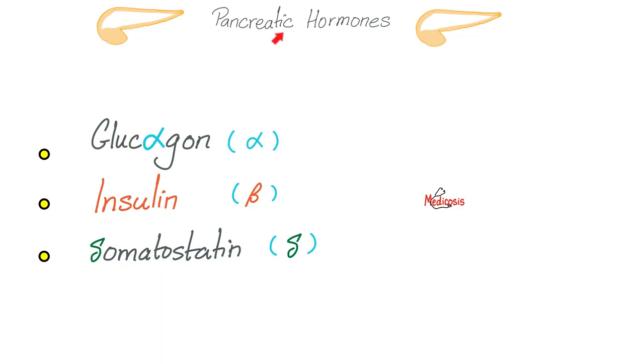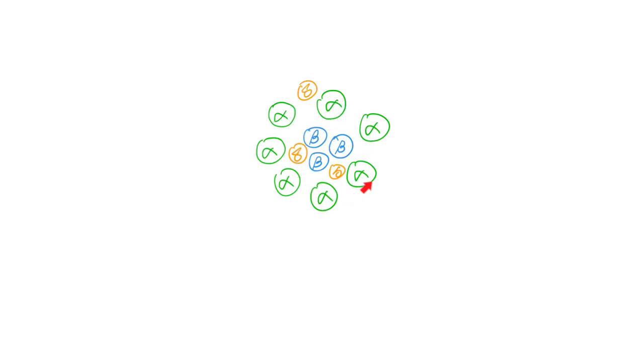Let's talk about the endocrine pancreas. Glucagon comes from the alpha cells; insulin from the beta cells; somatostatin from the delta cells. If we look closer into the islets of Langerhans, the beta cells are in the center — because insulin is the most important, it is central. Insulin alone has its own world. Glucagon, cortisol, thyroid hormone, and catecholamines are all somewhat similar — but you only have one insulin, and that's unique.